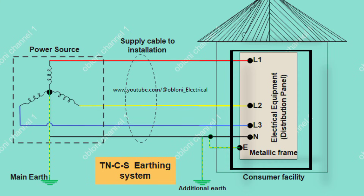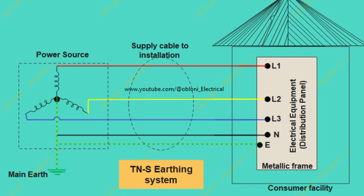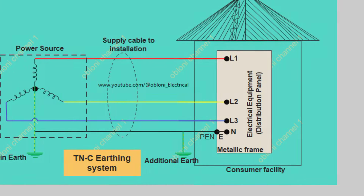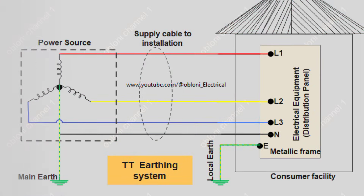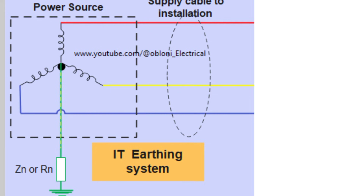Let's look at each of the earthing systems and how they work. We will first look at the TN system, which comprises of the TNS, the TNC, and the TNCS, then followed by the TT system, and then the IT system.